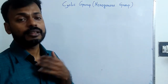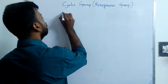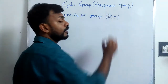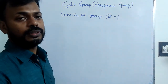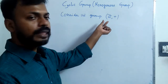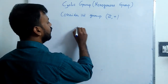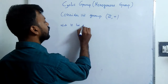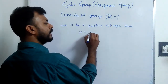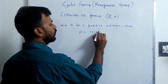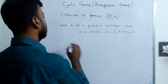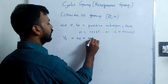Before going to the definition, I will give you an example. Consider the group Z+, the set of all integers with respect to the operation addition. We will show that a single element can generate all the elements of this group. If you take any positive integer n, then n can be written as 1 plus 1 plus 1, n times. So it is generated by 1.